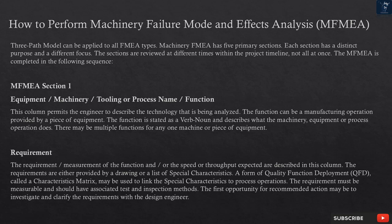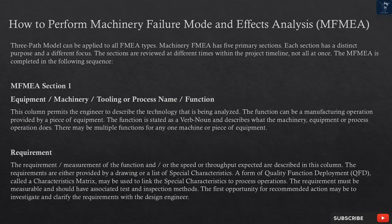How to perform Machinery Failure Mode and Effects Analysis (MFMEA): a three-path model can be applied to all FMEA types. Machinery FMEA has five primary sections. Each section has a distinct purpose and a different focus. The sections are reviewed at different times within the project timeline, not all at once. MFMEA Section 1 covers equipment, machinery, tooling, or process name and function. This column permits the engineer to describe the technology being analyzed. The function can be a manufacturing operation provided by a piece of equipment, stated as a verb-noun describing what the machinery, equipment, or process operation does.